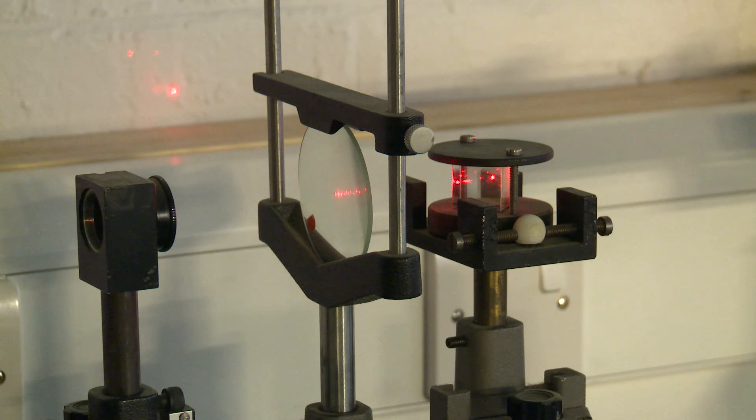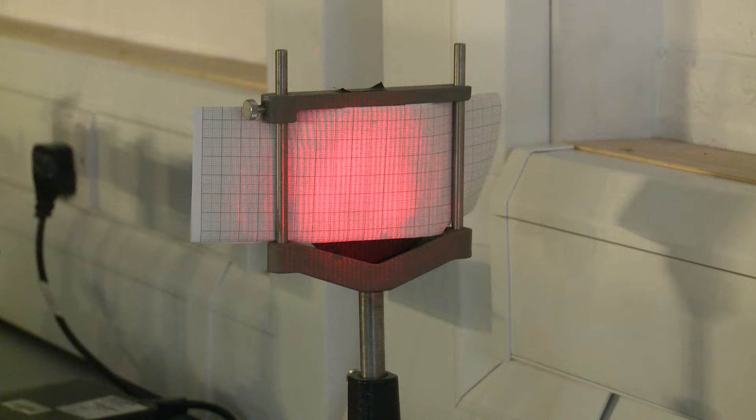In experiment 1, a short focal length lens is placed just behind the intersection point so that an enlarged image of the fringes is projected onto a sheet of paper.